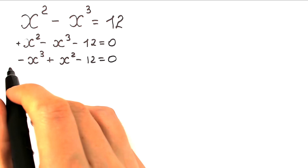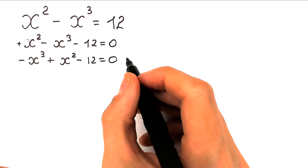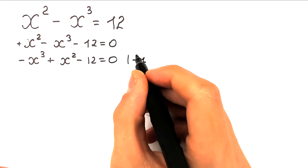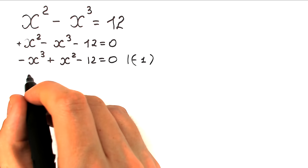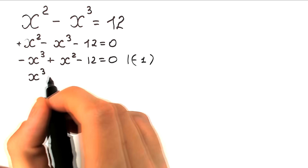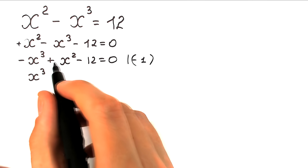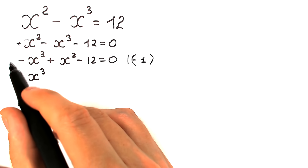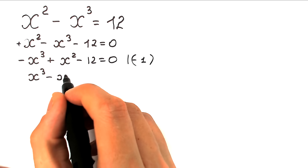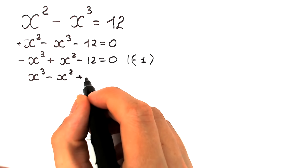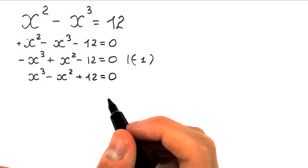We don't need to keep the minus in the beginning, so we can easily multiply both sides by -1. It's a really important moment because it's great not to have this minus at the start. So we have x³ minus x² — we should change all the signs. So x³ with minus becomes plus, then plus becomes minus: minus x², and plus 12 equals 0. This is our cubic equation.